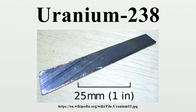Plutonium-239. U-238 is fissionable by fast neutrons, but cannot support a chain reaction because inelastic scattering reduces neutron energy below the range where fast fission of one or more next-generation nuclei is probable. Doppler broadening of U-238 neutron absorption resonances, increasing absorption as fuel temperature increases, is also an essential negative feedback mechanism for reactor control.